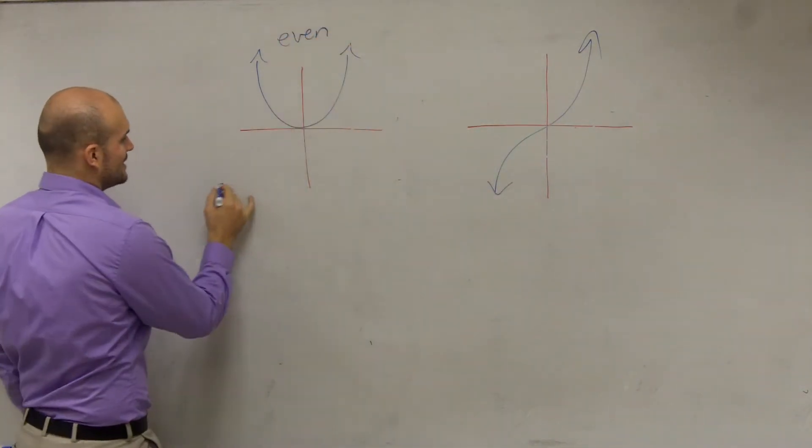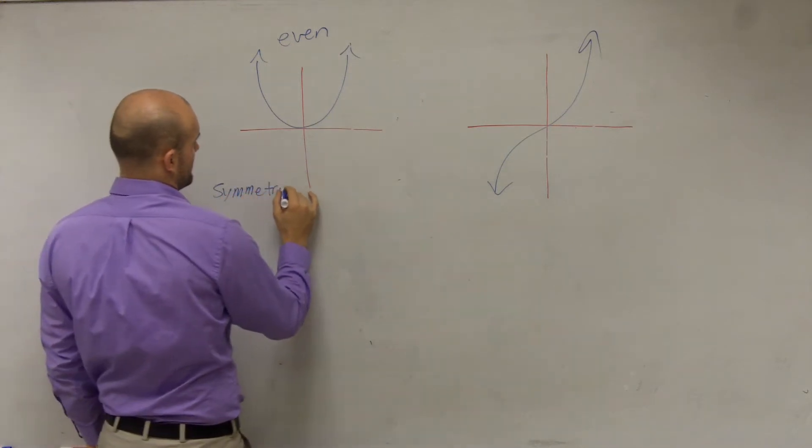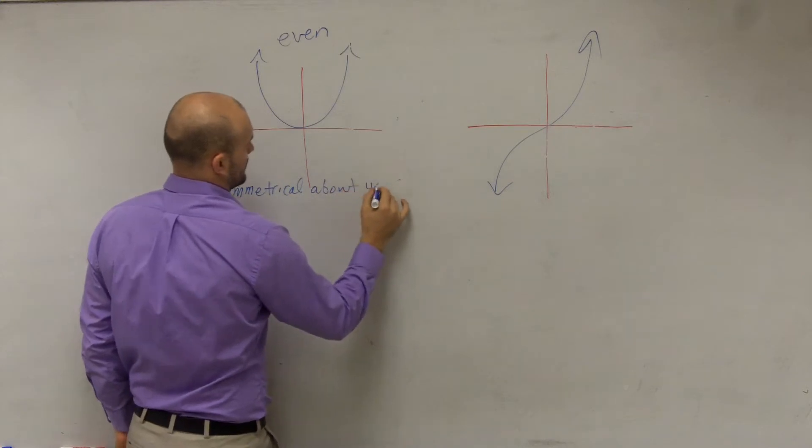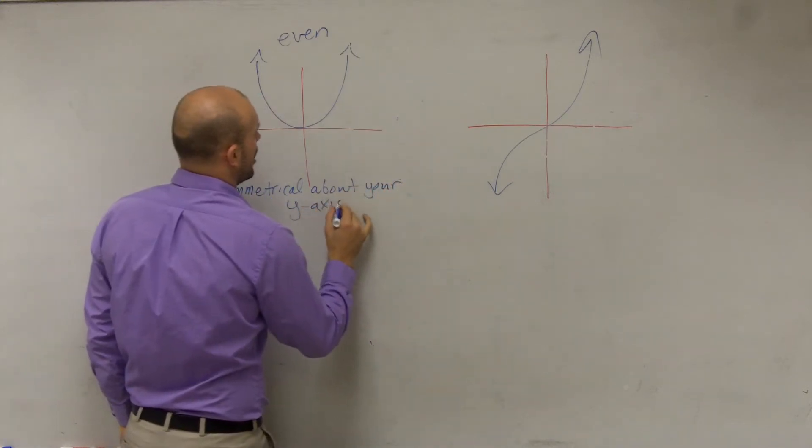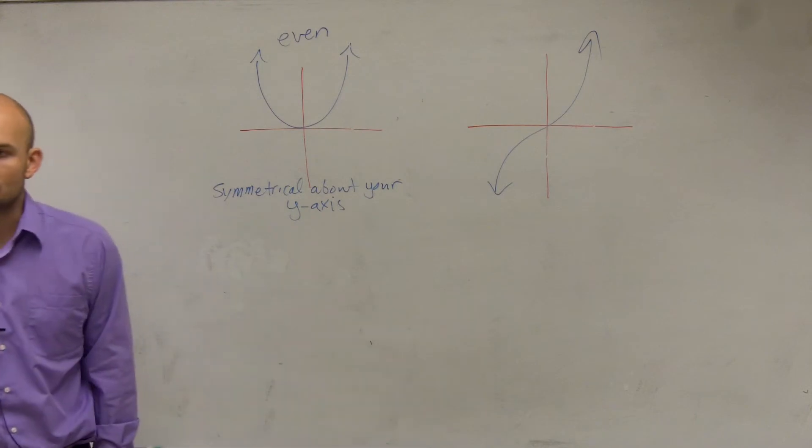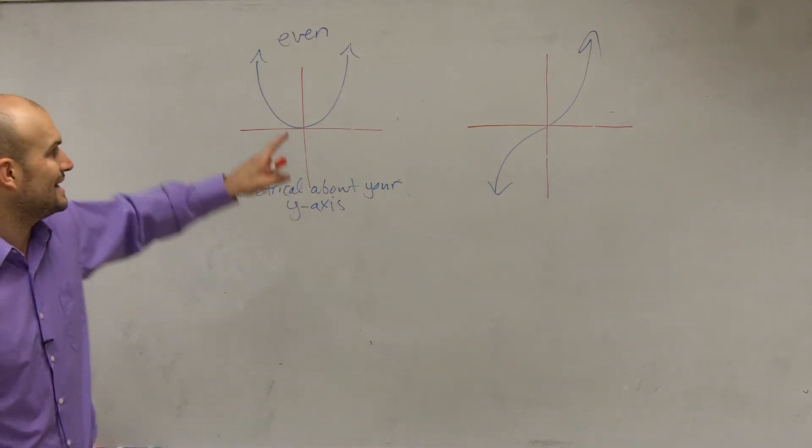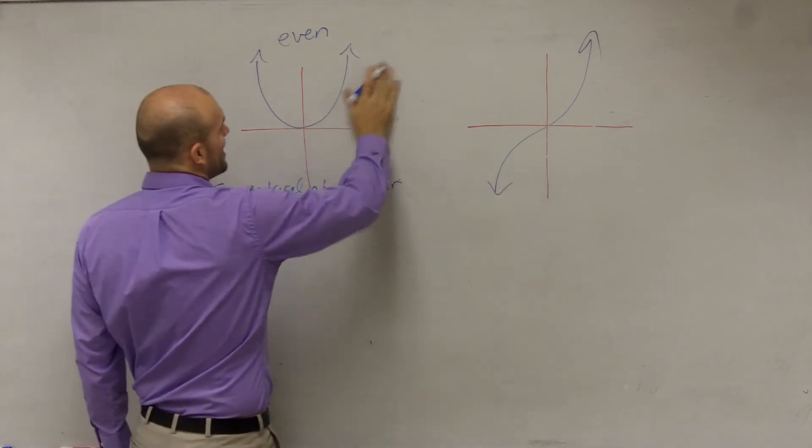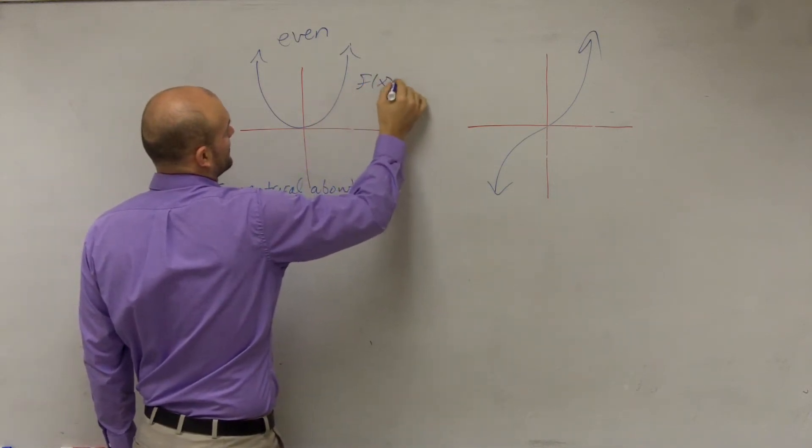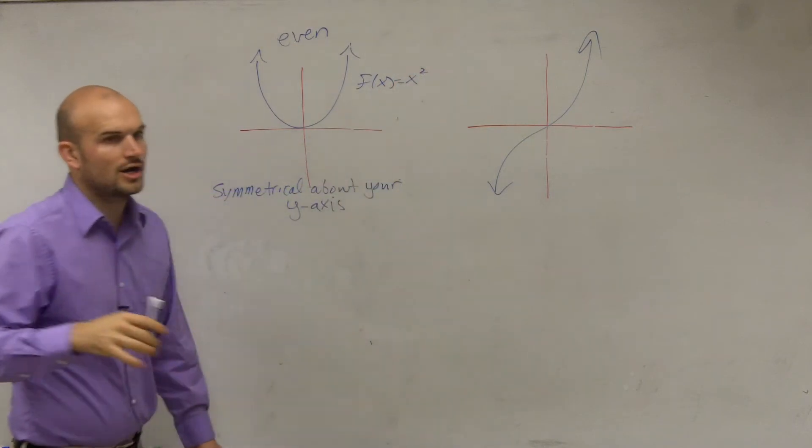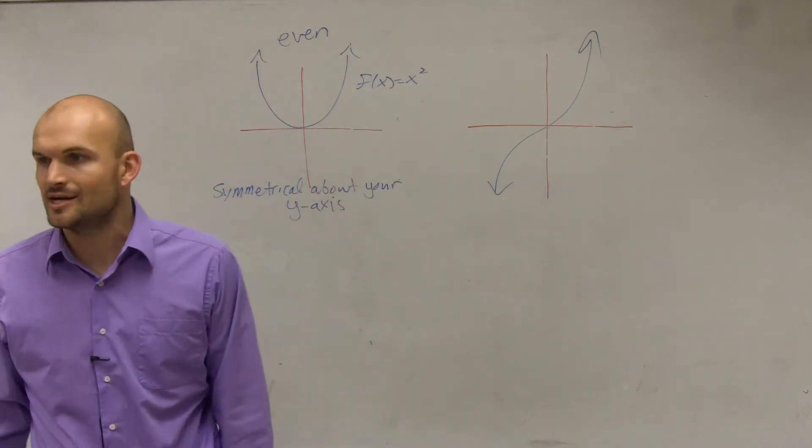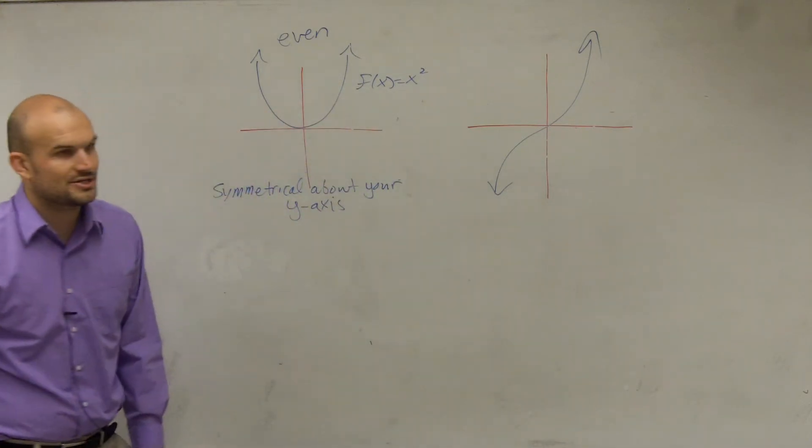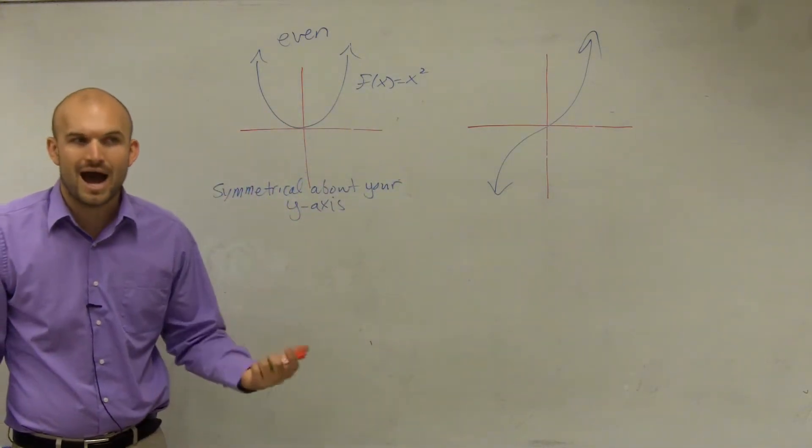The reason why is it's symmetrical. You guys are going to want to write this down. All even functions are symmetrical about your y-axis. It's not even because this is just the function of x squared. There are exponents that are even that end up not being symmetrical graphs. So it is symmetrical about the y-axis.